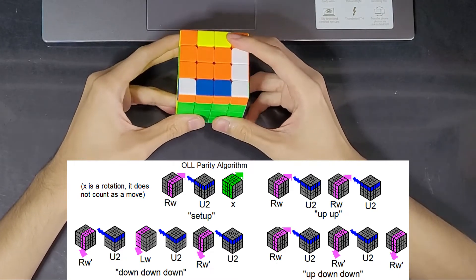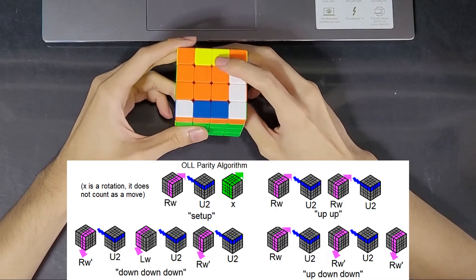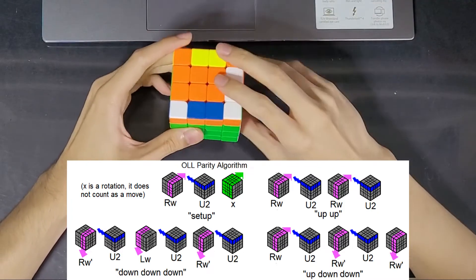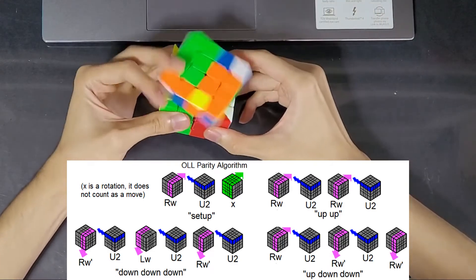So the first part of the algorithm goes like Rw U2 x. X is a rotation that turns the D face into the new F. So it will look something like that. So I'm just going to execute the first part. Rw U2 x. This is what I call the setup.